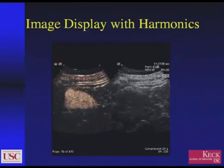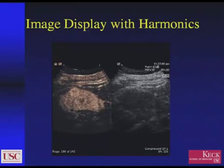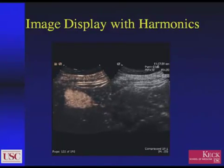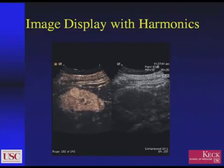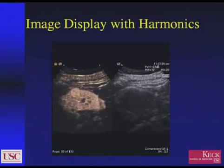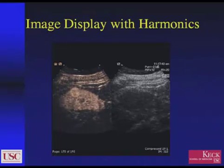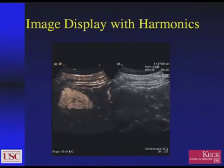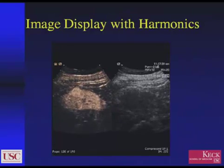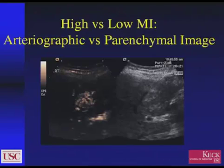Occasionally, if there's a little bit of contrast already present it may help you to localize the structure, and then you can use a single screen if you need a wider field of view. But typically we rely very heavily on this dual image — finding the target lesion or organ on the right using grayscale, then injecting contrast, which shows up in the left image.